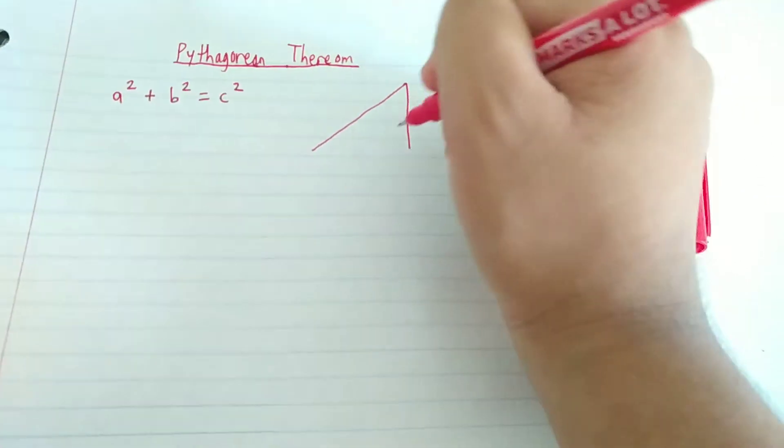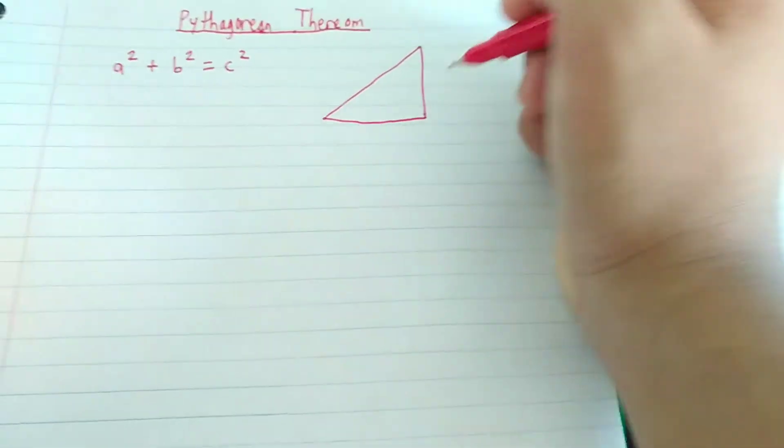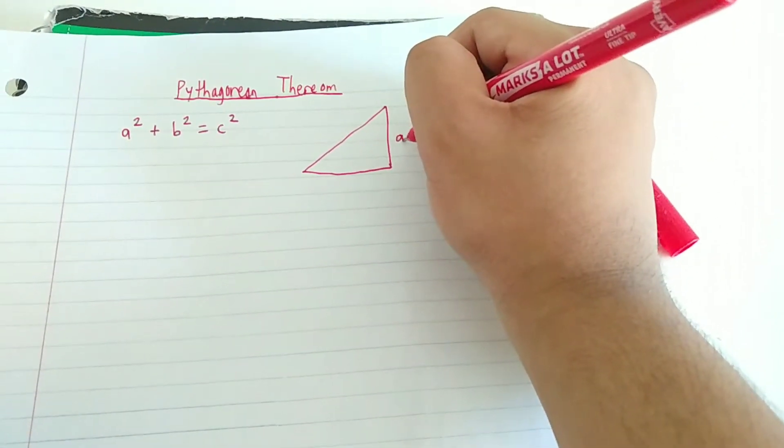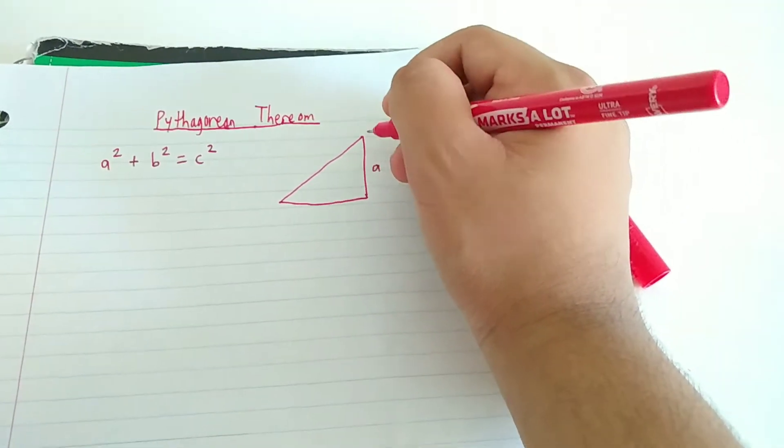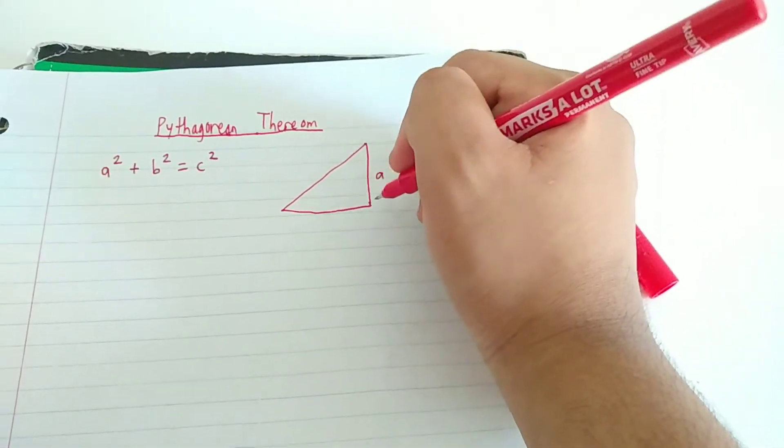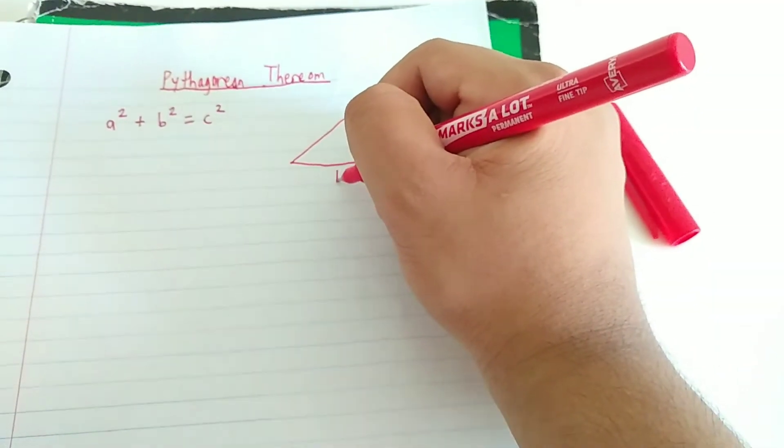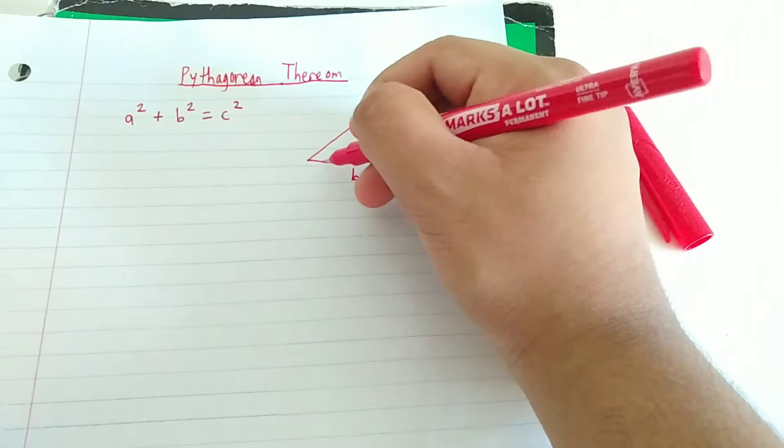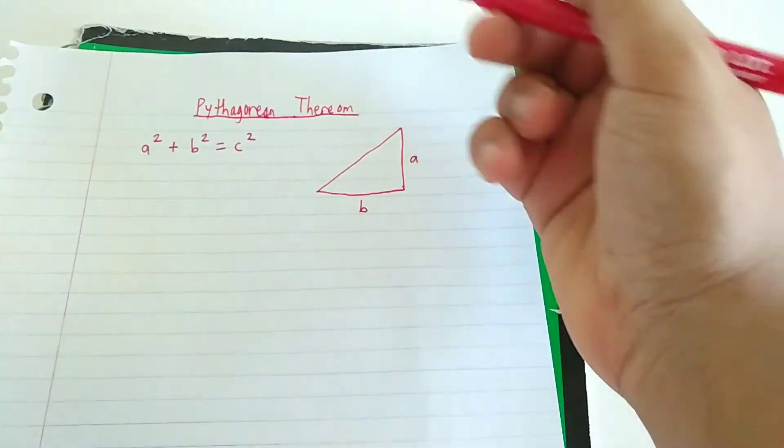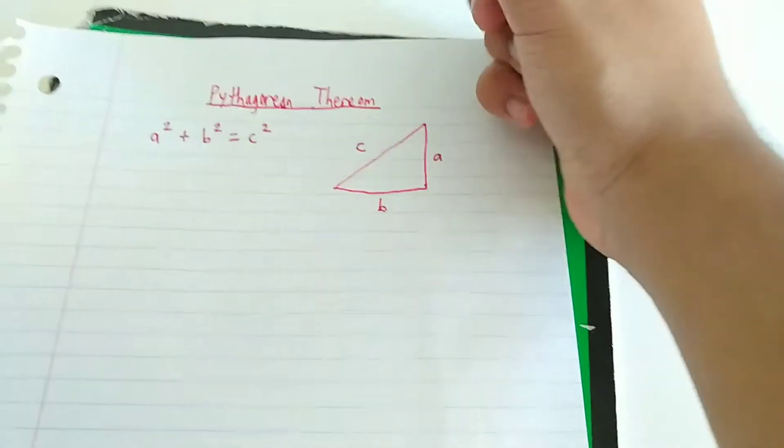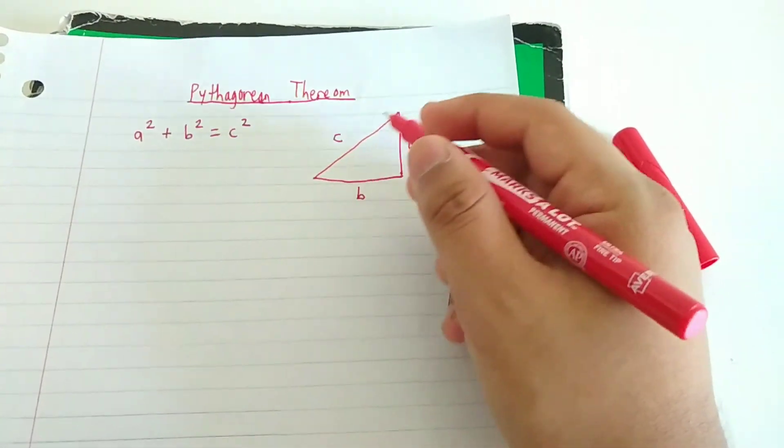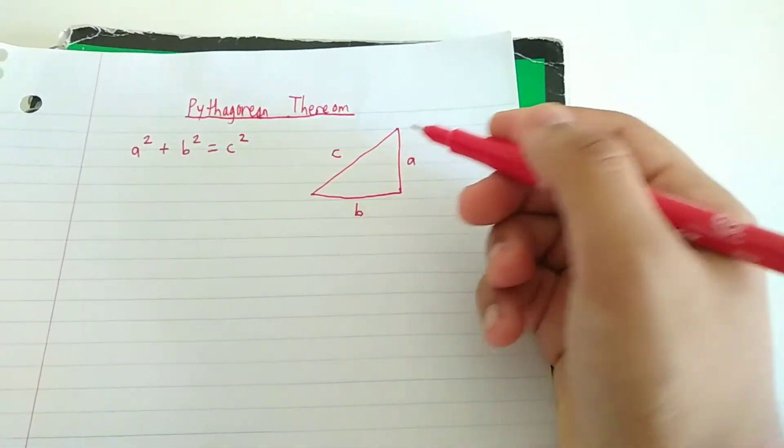So here's the right triangle here. So a represents this side, called the opposite side. b represents this side, called the adjacent side. And c represents this side, which is the longest side of the right triangle, called the hypotenuse.